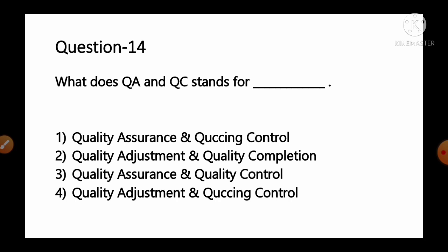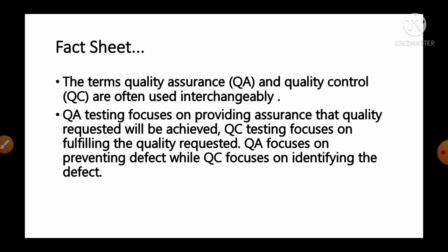Question number 14: What does QA and QC stand for? Options: 1) quality assurance and QC control, 2) quality adjustment and quality completion, 3) quality assurance and quality control, 4) quality adjustment and QC control. QA (quality assurance) focuses on preventing defects, while QC (quality control) focuses on identifying defects. The full forms are quality assurance and quality control. So option number 3 is the correct answer.